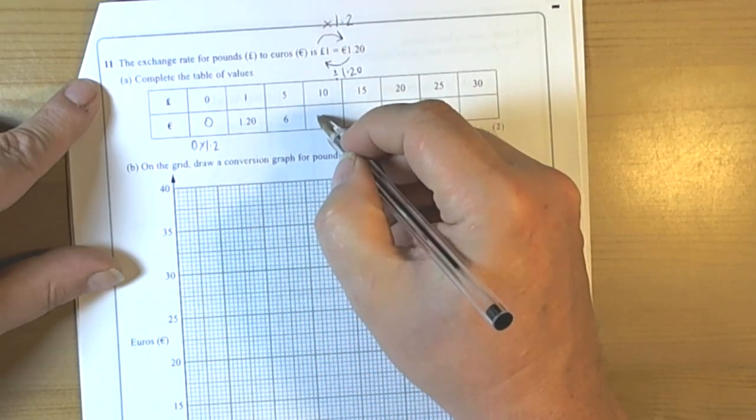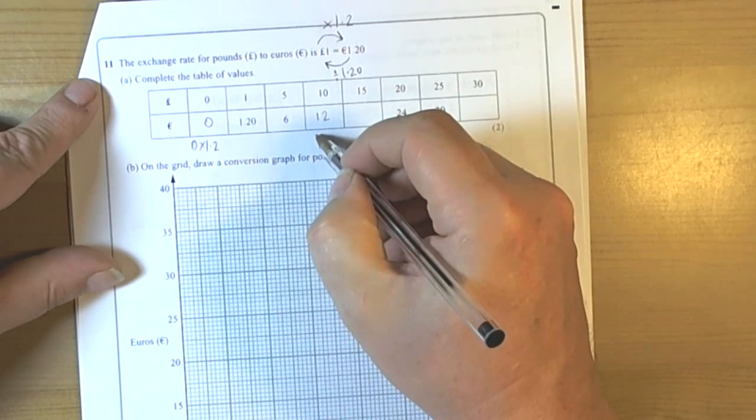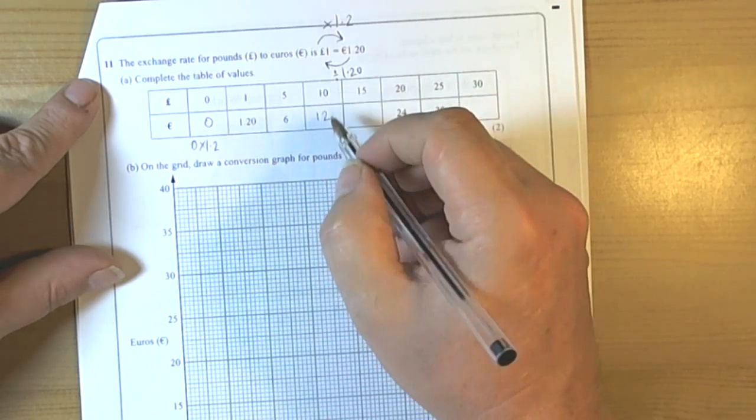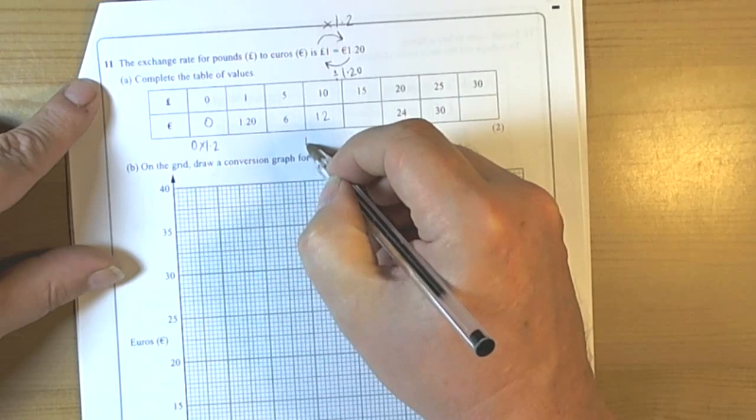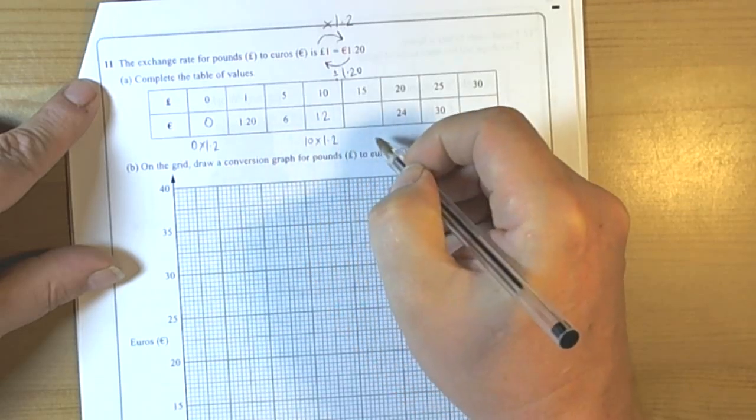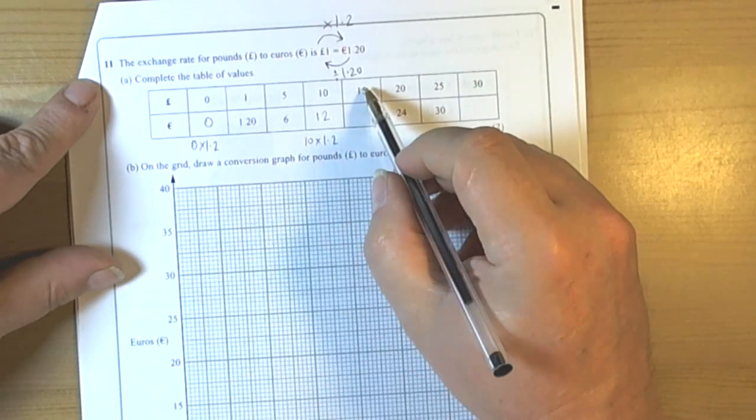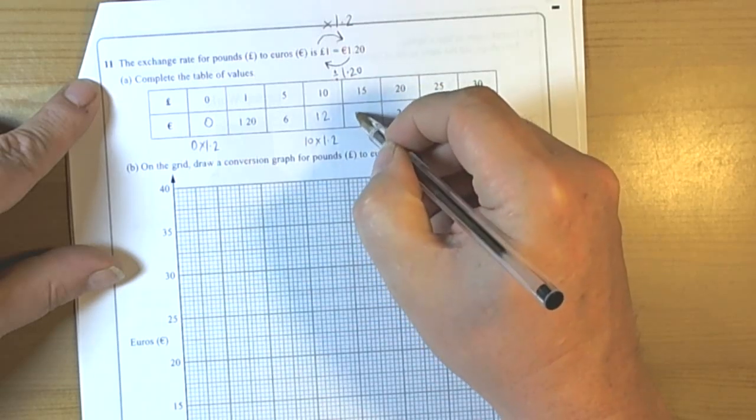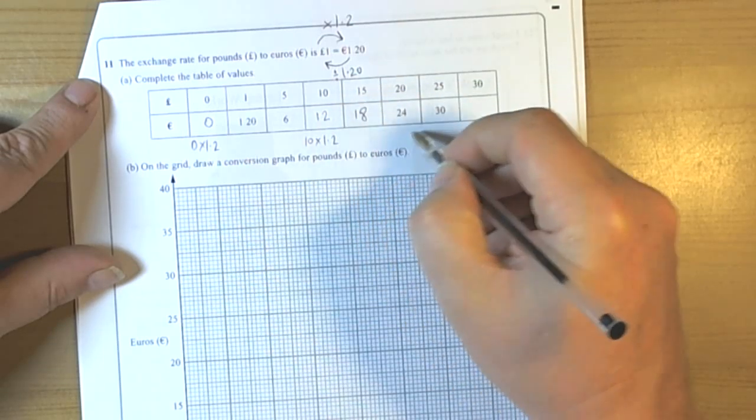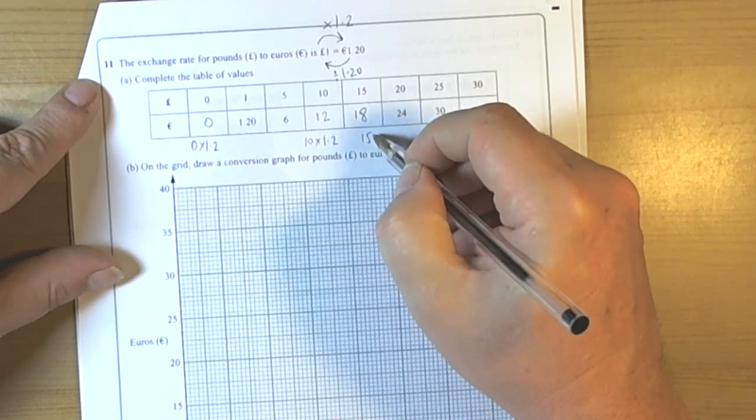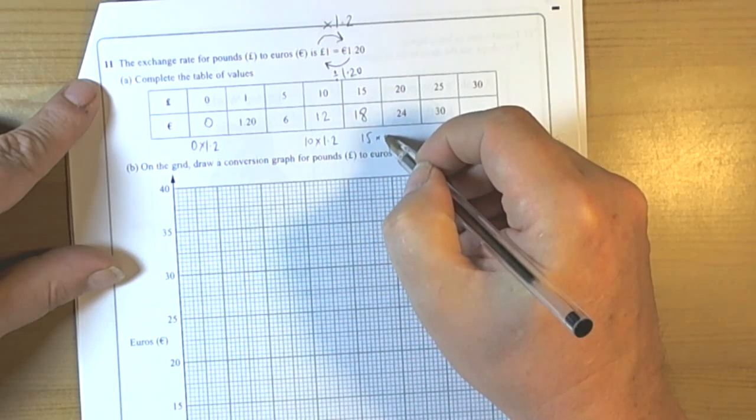10 times 1.2 is 12. And when you multiply by 10 you move the digits up one place value. So we did 10 times 1.2, and 15 times 1.2 is 18.